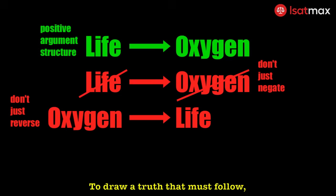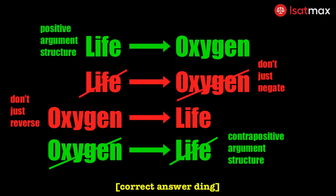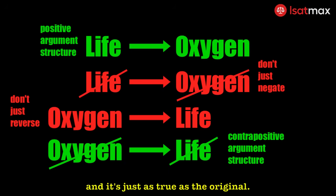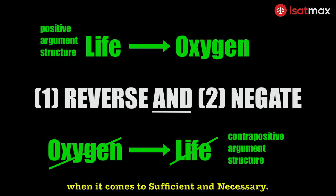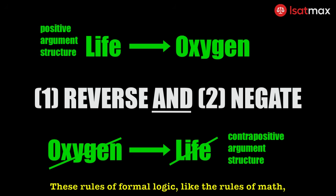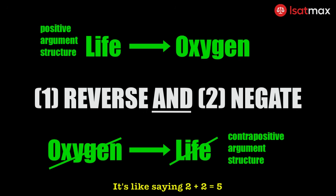To draw a truth that must follow, you have to reverse and negate. This is the contrapositive, and it's just as true as the original. Reverse and negate — that's our motto when it comes to sufficient and necessary, and that's how we arrive at what must be true. These rules of formal logic, like the rules of math, guard against contradiction. Ignore them, and you risk flawed reasoning. It's like saying 2 plus 2 equals 5. You've left the truth behind.